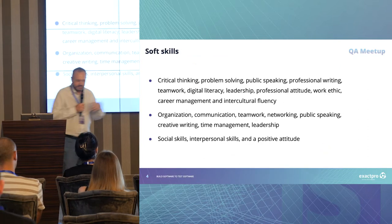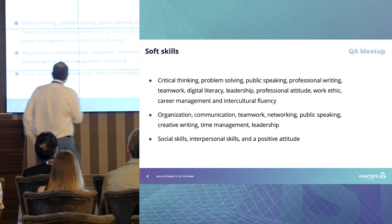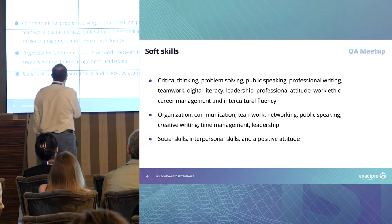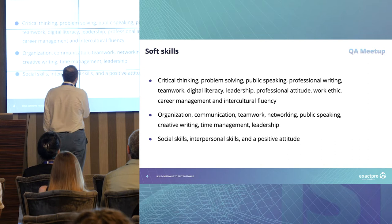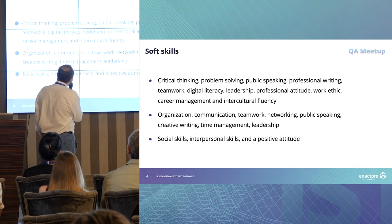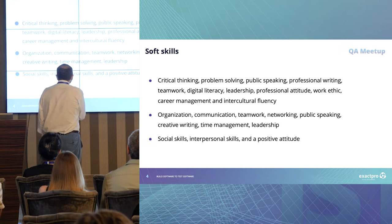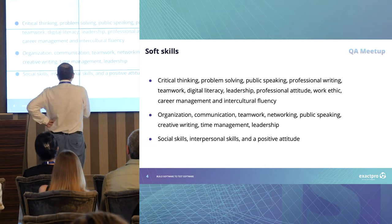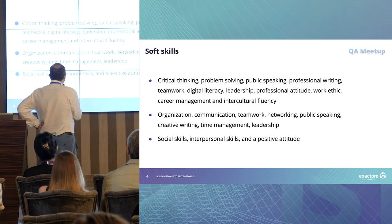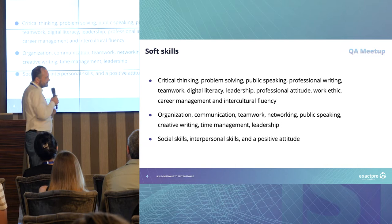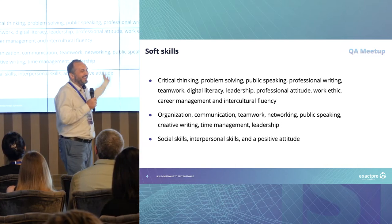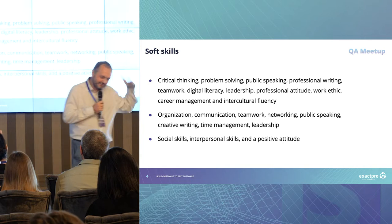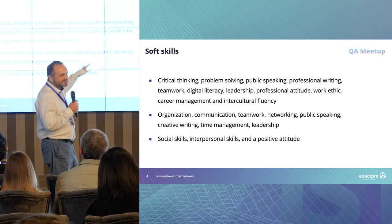Let's go ahead and look at some definitions from different sources. The longest one says soft skills are critical thinking, problem solving, public speaking, professional writing, teamwork, digital literacy, leadership, professional attitude, work ethic, career management, and intercultural fluency. The shortest says it's just social skills, interpersonal skills, and a positive attitude. Something in between includes organization, communication, teamwork, networking, public speaking, creative writing, time management, and leadership. The list of soft skills is itself soft — you can't clearly create a complete list, but more or less it's about the same.